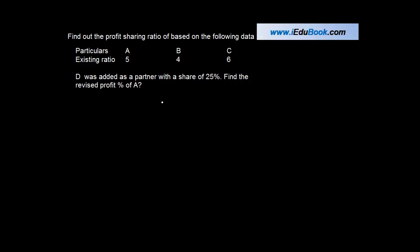So we have a situation where we had three partners A, B and C, and their ratio was given as 5 is to 4 is to 6.